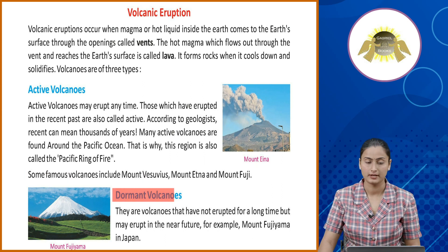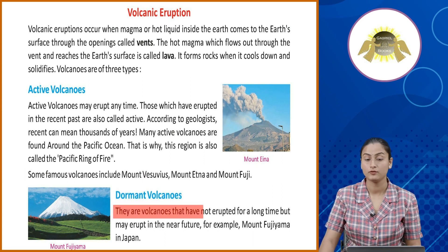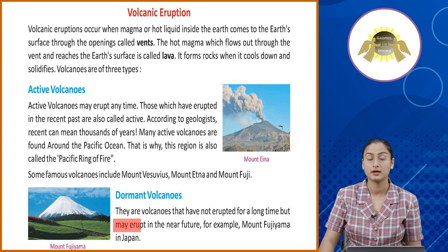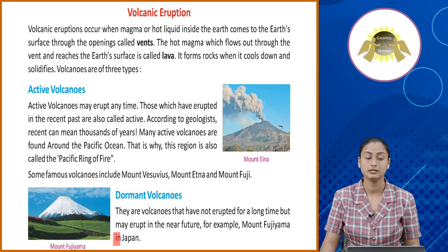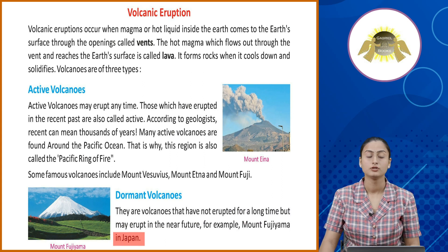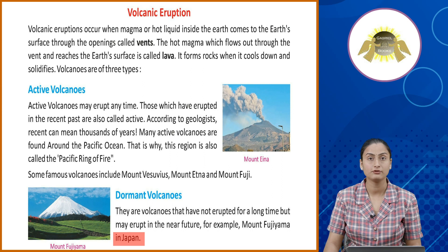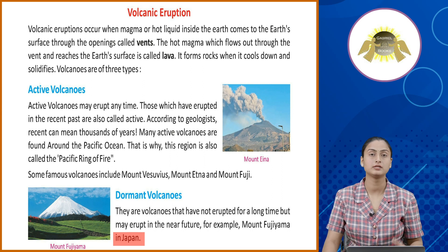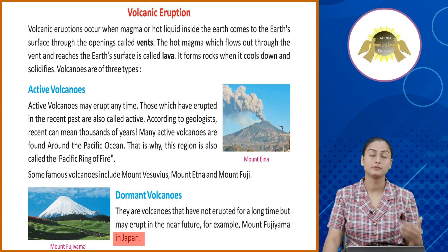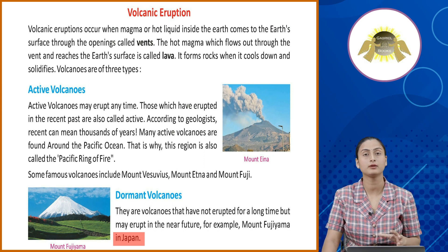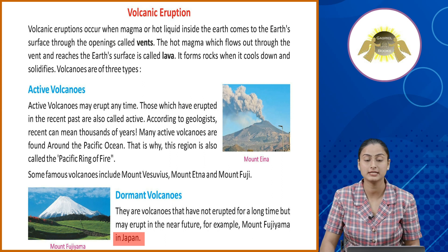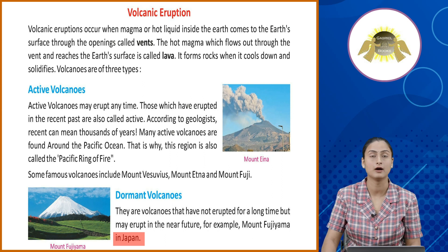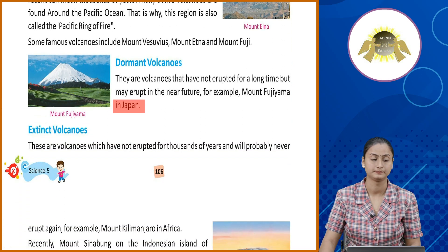Dormant volcanoes are volcanoes that have not erupted for a long time, but may erupt in the near future. For example, Mount Fujiyama in Japan. Dormant volcanoes woh hote hai jo recent times mein erupt nahi hote hai, lekin near future mein erupt ho sakti hai, jaise ki Japan mein jo Mount Fujiyama volcano hai.